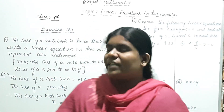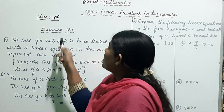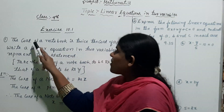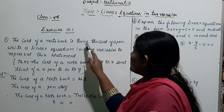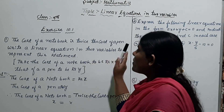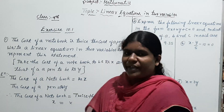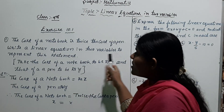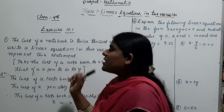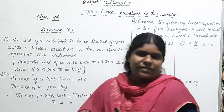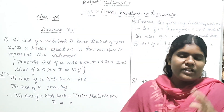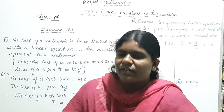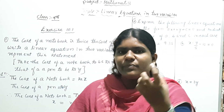The first question of Exercise 10.1: 'The cost of a notebook is twice the cost of a pen. Write a linear equation in two variables to represent this statement.' Here you need to understand, children — one statement is given. What is that statement?